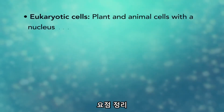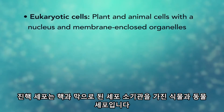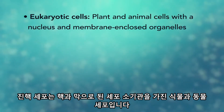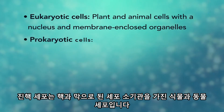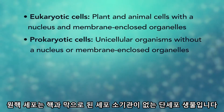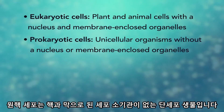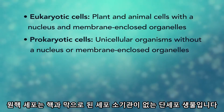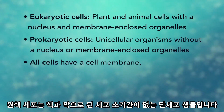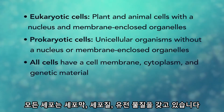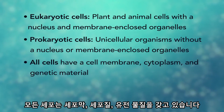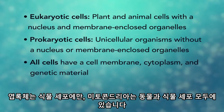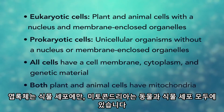In summary: eukaryotic cells are plant and animal cells with a nucleus and membrane-enclosed organelles, while prokaryotic cells are unicellular organisms without these things. All cells have a cell membrane, cytoplasm, and genetic material. And even though only plant cells have chloroplasts, both plant and animal cells have mitochondria.